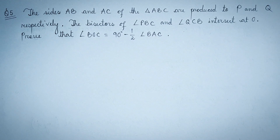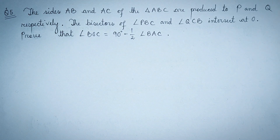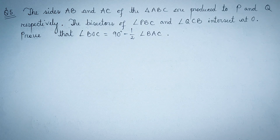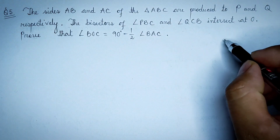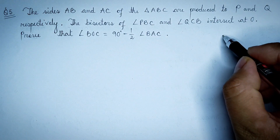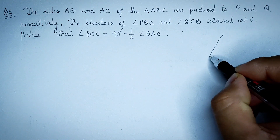I will show you question 5. In question 5, we will show you the sides of the triangle ABC. ABC is the triangle. We will show you the triangle A, B, C.